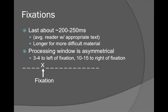The processing window of what we're looking at is asymmetrical. There are three or four characters to the left of fixation and ten to fifteen to the right. That means we're looking ahead to what's next, while keeping a little of what we've already processed so we know where we're at. When we jump, we jump to an area we've already processed so we can then look ahead.